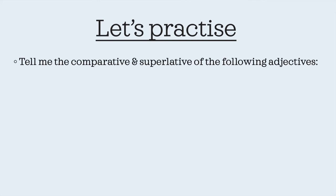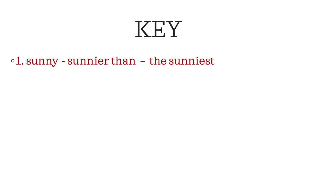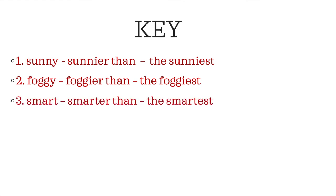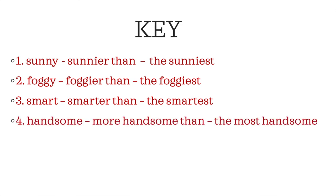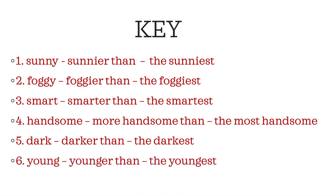Now let's practice. Tell me the comparative and superlative of the following adjectives — pause the video to complete the exercise. Here is your answer key: sunny → sunnier than → the sunniest; foggy → foggier than → the foggiest; smart → smarter than → the smartest; handsome → more handsome than → the most handsome; dark → darker than → the darkest; young → younger than → the youngest.